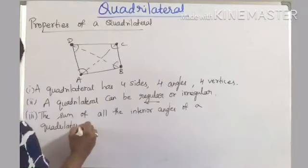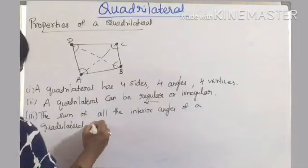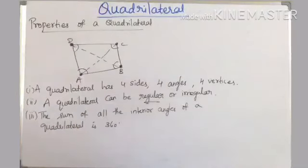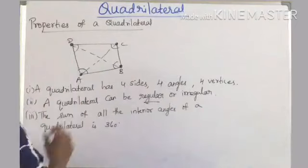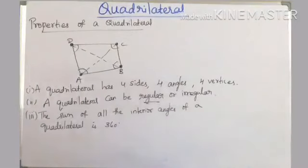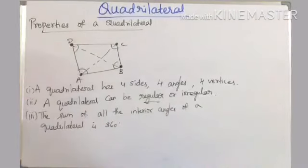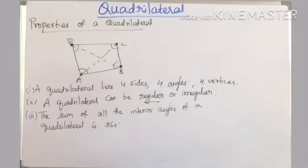The third property is: the sum of all the interior angles of a quadrilateral is 360 degrees. So, to summarize: a quadrilateral has four sides, four angles, and four vertices; it can be regular or irregular; and the sum of all interior angles is 360 degrees.